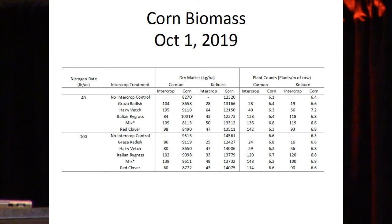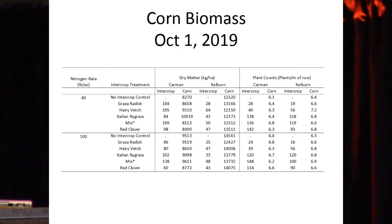Was the corn negatively affected by having this understory crop growing with it after V5 or V6? The answer is no — there was no significant difference in corn biomass and no interaction between corn biomass and the different understory crops we tried. It was a dry year. This is corn biomass harvested October 1st — not corn yield — and you can see we had a lot more biomass at Kelburn than at Carmen, reflecting each site's different amounts of competition for light.